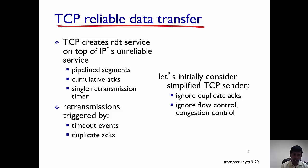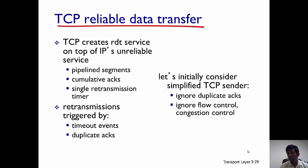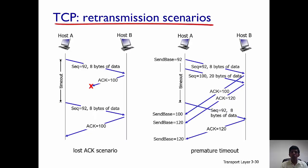Retransmissions at the sender are triggered by two events: the first is timeout events, and the second is duplicate acknowledgements. We will consider a few simple scenarios at first where we will ignore duplicate acknowledgements, flow control, and congestion control.